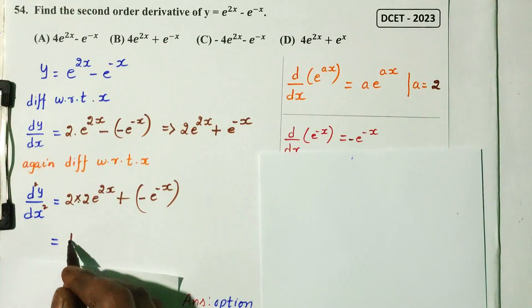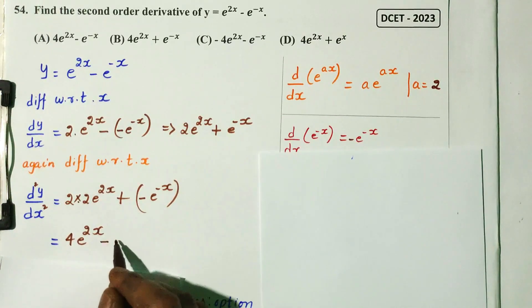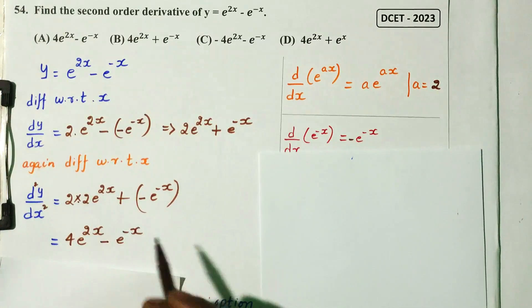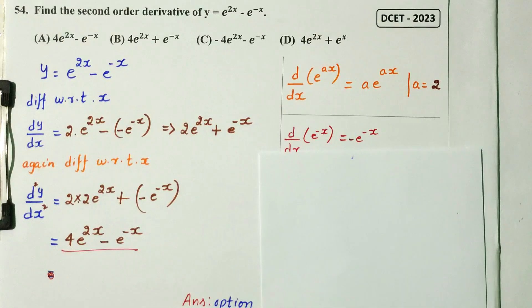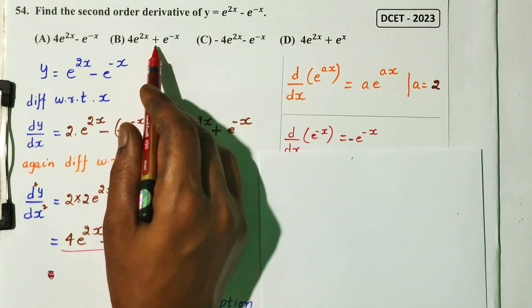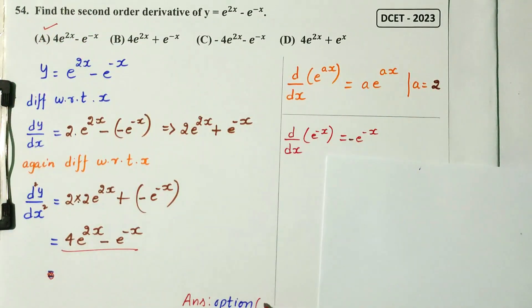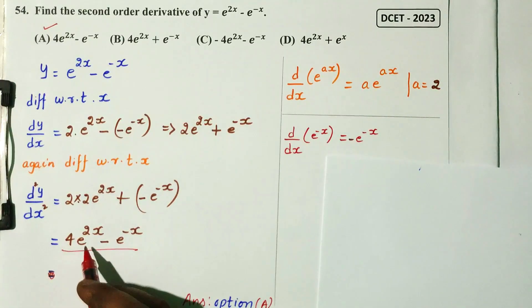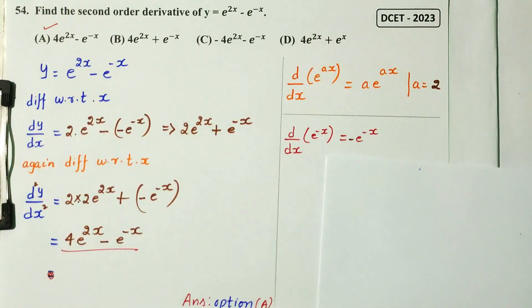Second differentiation: 2 times 2 gives 4, so d²y/dx² = 4e^(2x). For e^(-x), plus into minus gives minus e^(-x). So d²y/dx² = 4e^(2x) minus e^(-x). Option E is the right answer — DCT 2023.